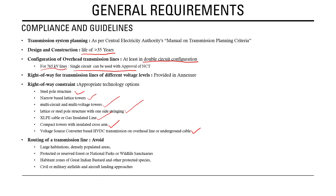Regarding routing of transmission lines, certain areas must be avoided to minimize right-of-way issues. Large habitation and densely populated areas should be avoided. Protected or reserved forests, national parks, and wildlife sanctuaries should be avoided as transmission lines through these areas impact protected wildlife.